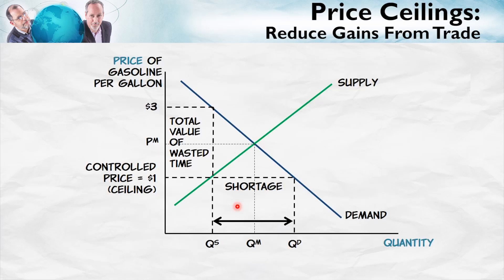Here's our standard diagram. I've labeled some things we talked about in earlier lectures, namely the shortage of the controlled price and the total value of wasted time. The key point for understanding the reduced gains from trade is that at the free market equilibrium, at this price and quantity QM, we have more units exchanged than at the price control equilibrium. With the price control, only QS units are exchanged — a smaller amount.